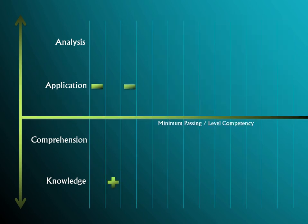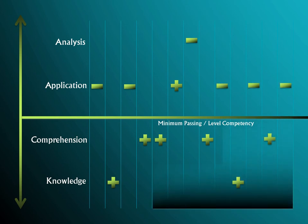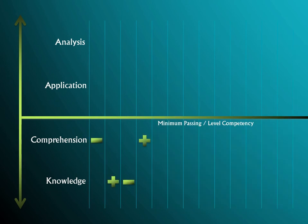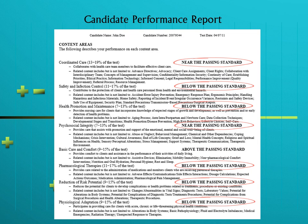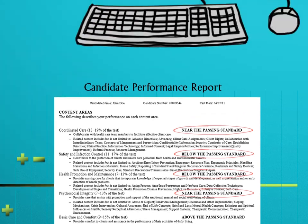The opposite can happen if the exam keeps throwing you questions and most of them fall below or near passing standard, in which case it would shut off. So if a candidate is performing at near passing, the test can go on longer and longer until it can provide enough statistical proof that you are performing above, near, or below competency level for all the client care needs categories.